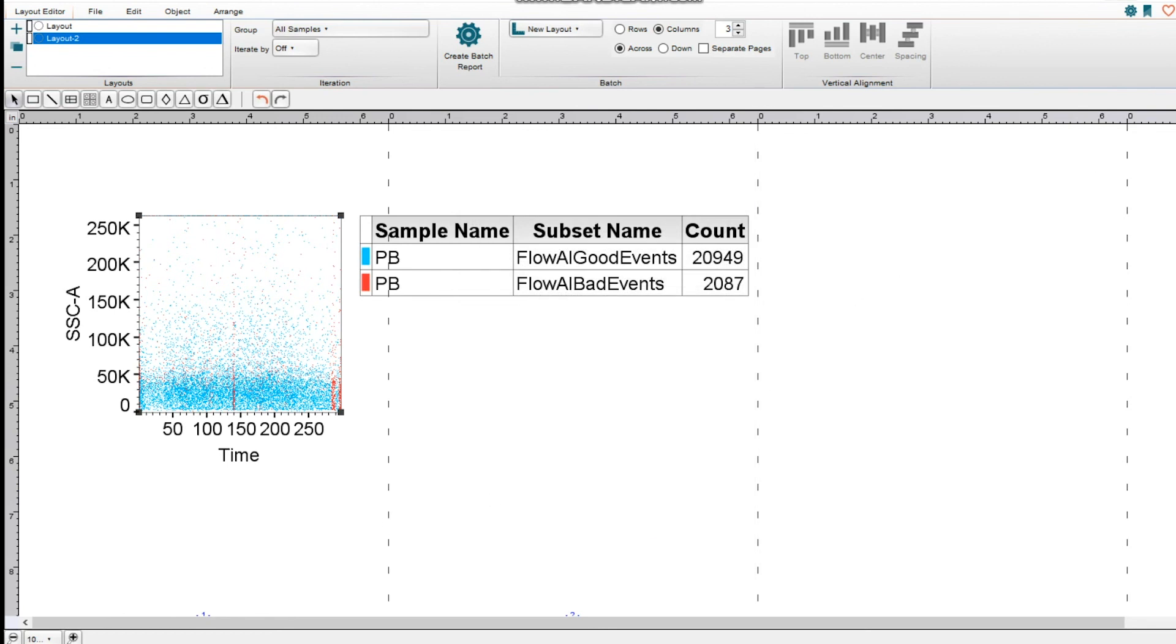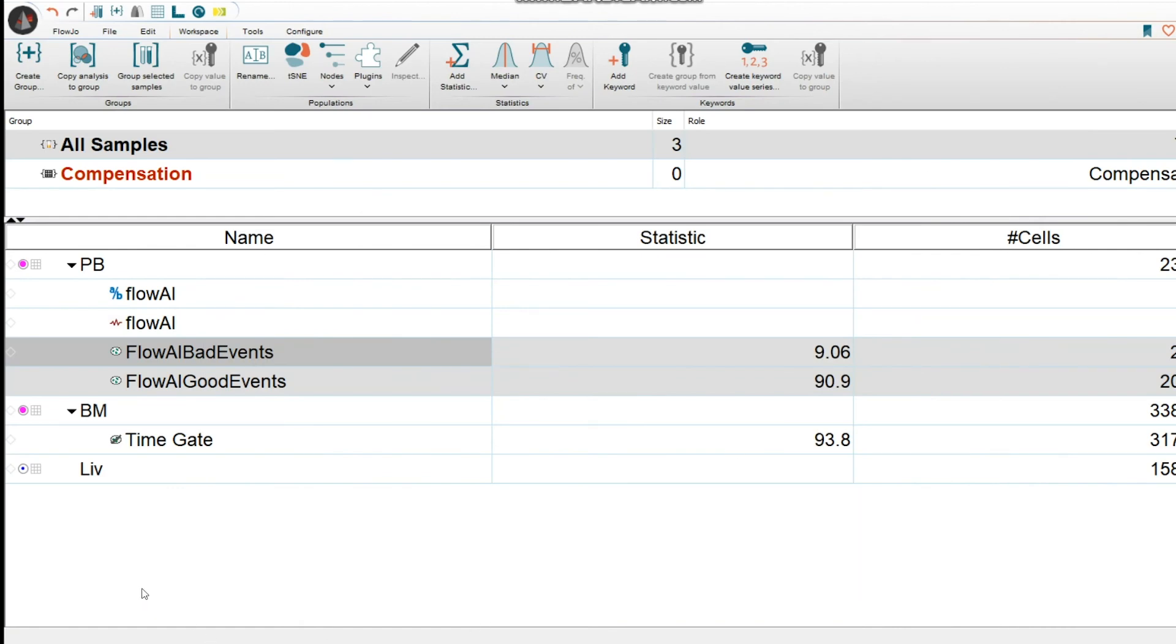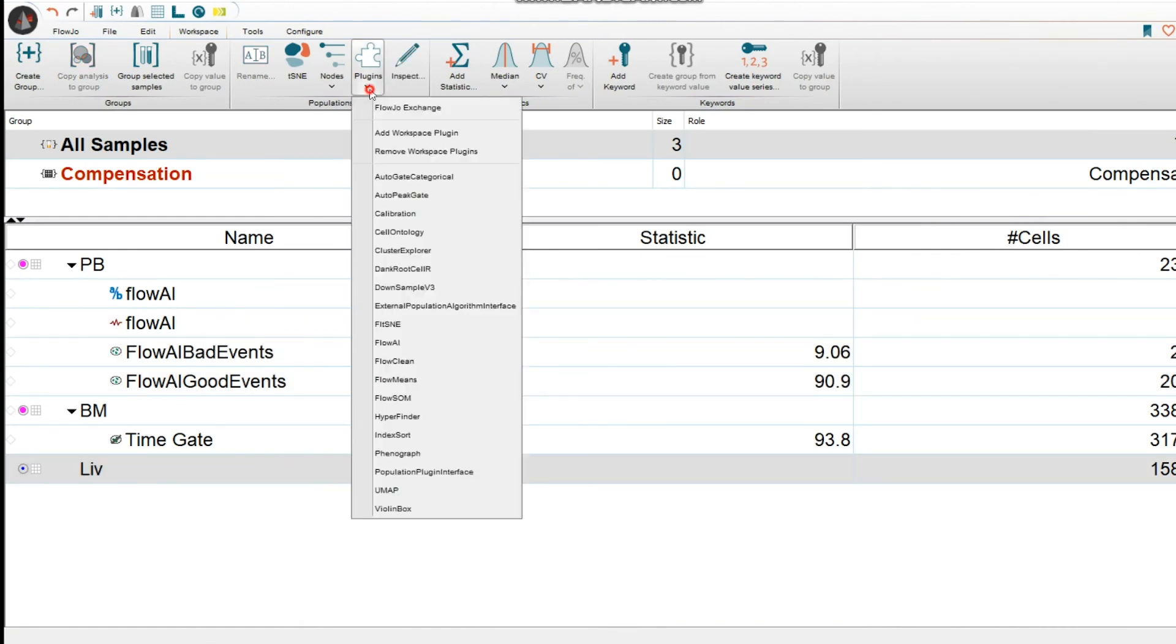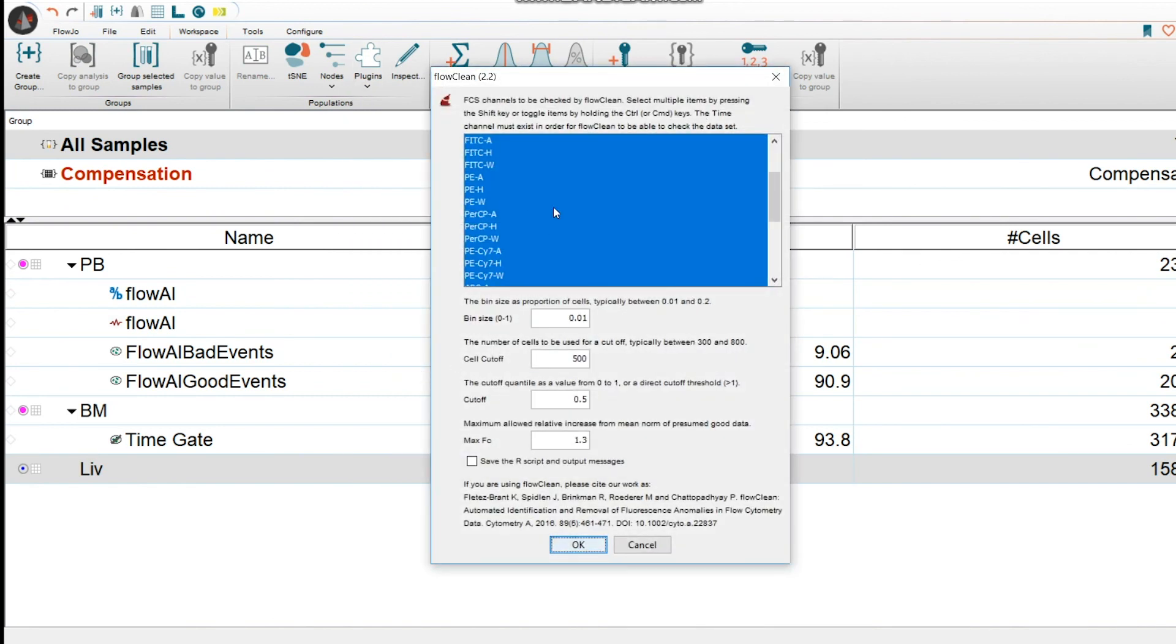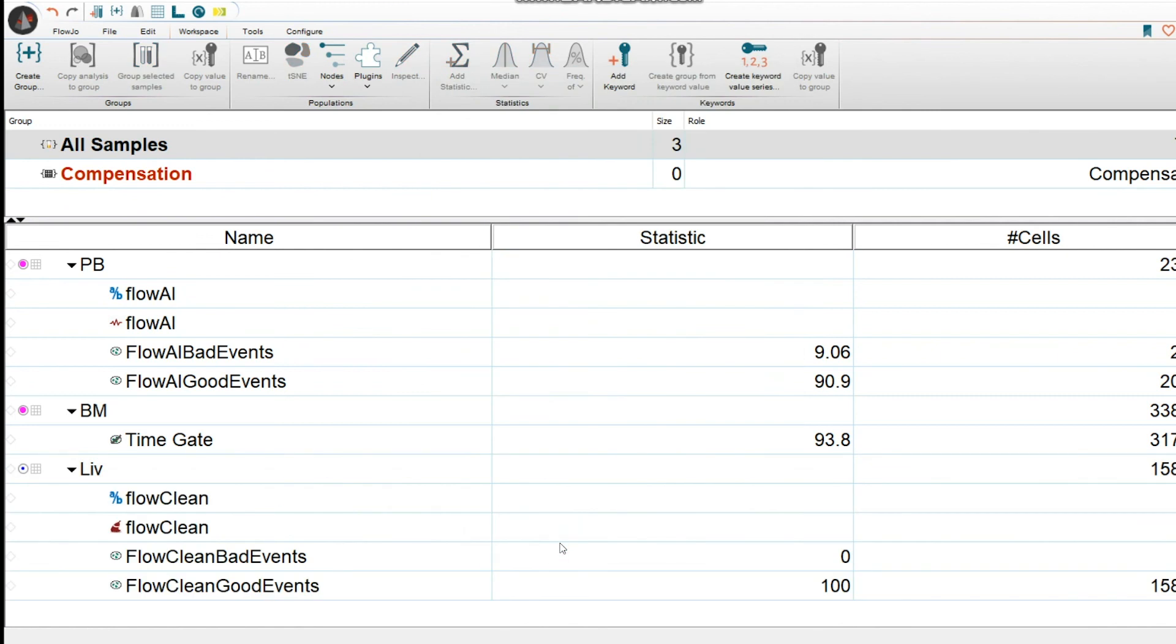All right. Next, let's see how we would do FlowClean. So let's select the sample. You would then go to plugins, select FlowClean, select again all the non-compensated parameters, as well as selecting time. Again, I would save the R script, and you would just click on OK. And as you can see here, then you get an output. There's their different algorithms, so they check for different things.